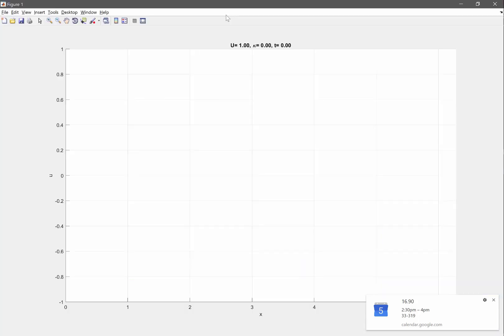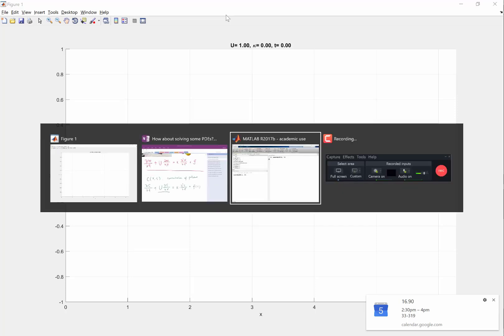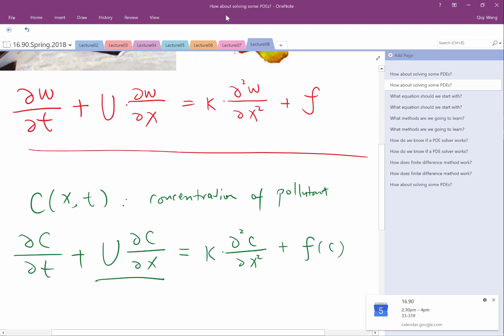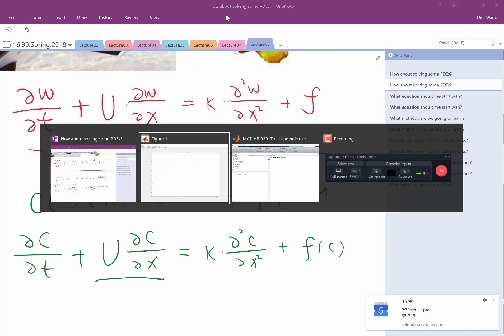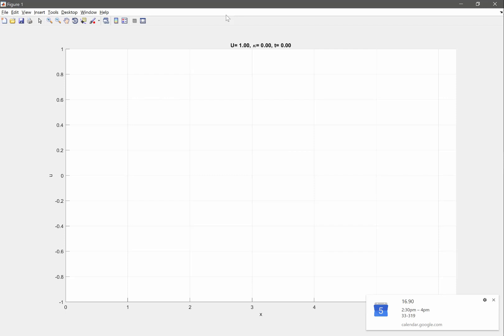Now for this equation, can somebody come up and draw an initial condition you would like to see? How the solution will evolve as time goes on? So here is the equation we are solving. And here we just chose a U, big U equal to one, kappa equal to zero. What I'd like you to do is I'd like you to draw the initial condition for this equation, just an arbitrary initial condition you would like, and we can see how the solution goes.